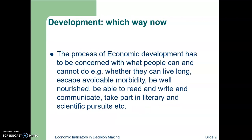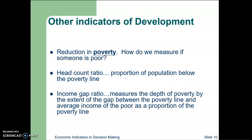The process of economic development must be concerned with what people can and cannot do — for example, whether they can live long, escape avoidable morbidity, be well-nourished, be able to read, write, and communicate, and take part in literary and scientific pursuits. Other indicators include reduction in poverty. To measure poverty: the headcount ratio is the proportion of the population below the poverty line, and the income gap ratio measures the depth of poverty by the gap between the poverty line and the average income of the poor as a proportion of the poverty line.